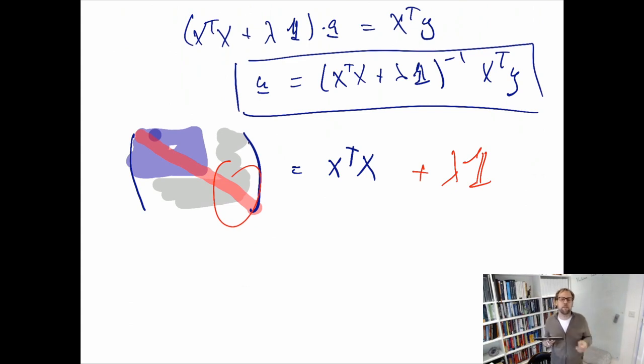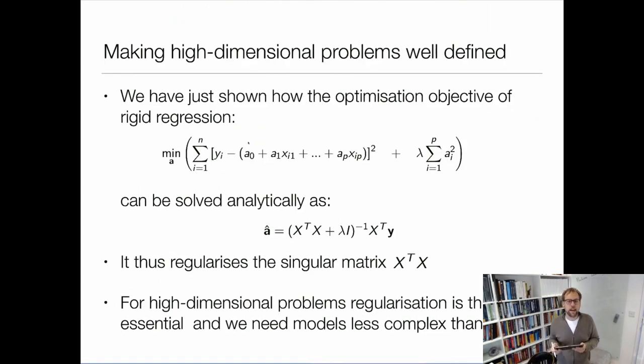We will see that if we have high dimension statistics I cannot even do standard linear regression anymore just because this X transpose X is not invertible anymore. But once I add this extra term, once I add the regularization term I will get this extra term in this matrix which has to be inverted which actually makes it invertible and this solves the problem there. This is how regularization comes to the rescue in high dimensional statistics.